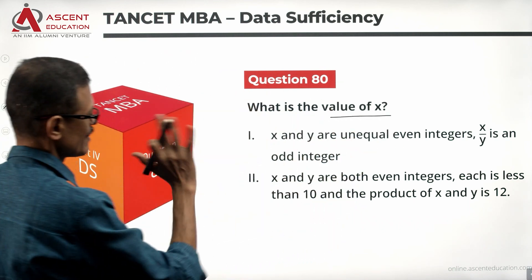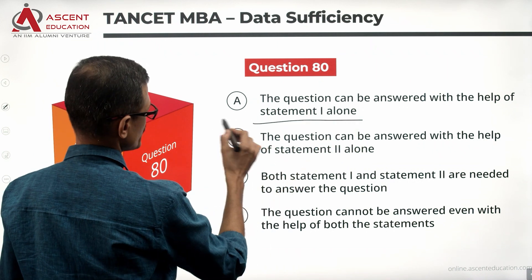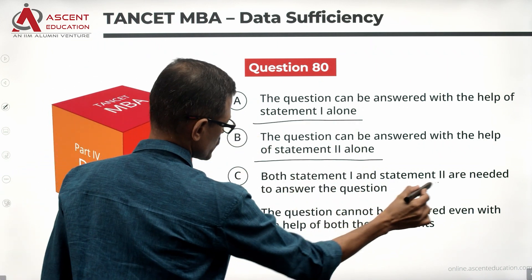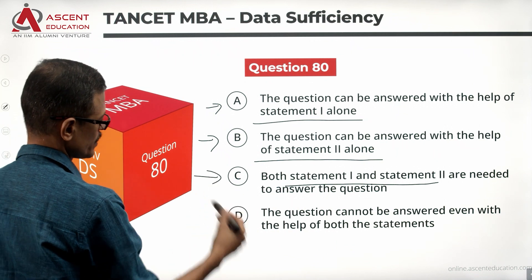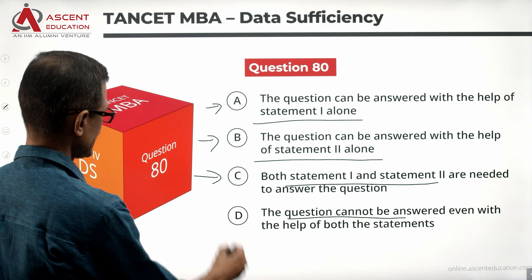Take a look at the question. What is the value of X? We'll come to the statements in a while. Statement 1 alone is sufficient, answer option is A. Statement 2 alone is sufficient, answer option is B. Statements 1 and 2 together are sufficient, answer option is C. The question cannot be answered even with all the data, the answer option is D.